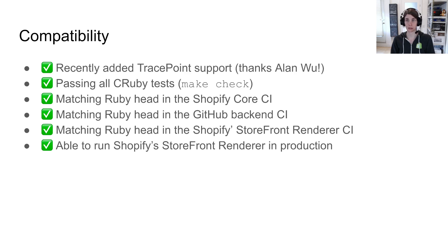But perhaps most importantly, our biggest achievement is compatibility. We've recently added support for trace points and we're passing all the CRuby tests. We're also matching Ruby head in the Shopify core CI, matching Ruby head in GitHub backend CI, and also in Shopify storefront renderer CI. We're able to run Shopify storefront renderer in production, which is a big achievement.